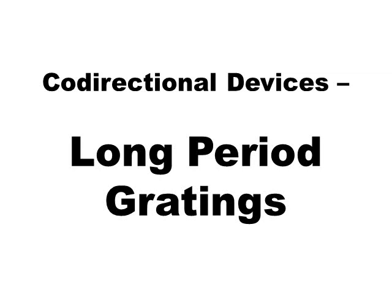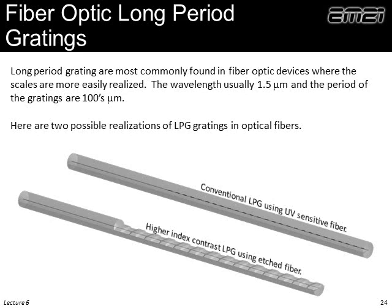The last type of co-directional device is the long period grating, which is quite interesting in optical fibers. Remember: if we are coupling between two different modes, the grating vector is the difference between the propagation constants. If we have two modes that are very evenly matched, that β₁ minus β₂ is a very small number, corresponding to a very small grating vector — which means very long period gratings. We can put these long period gratings in optical fibers to couple between forward propagating modes.